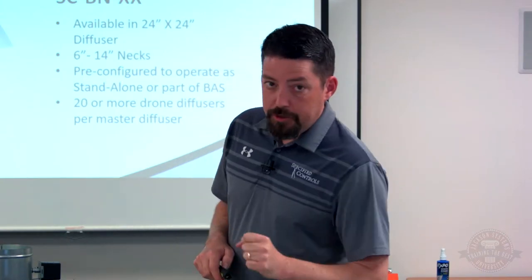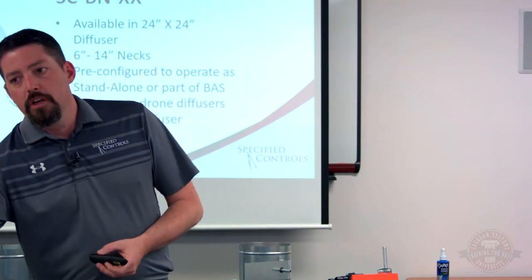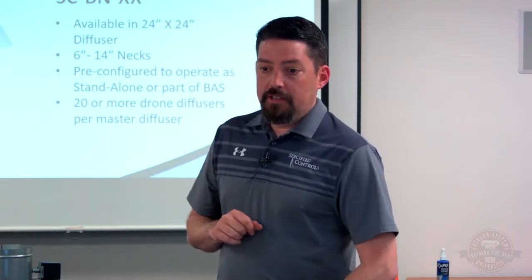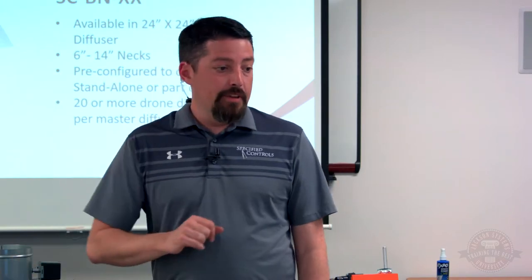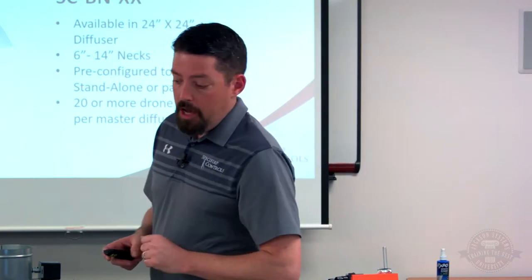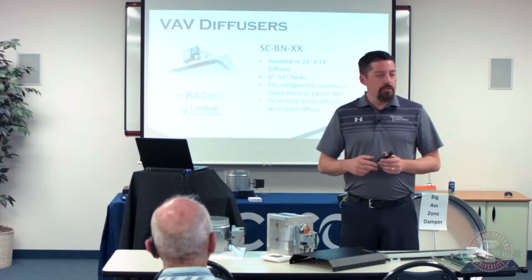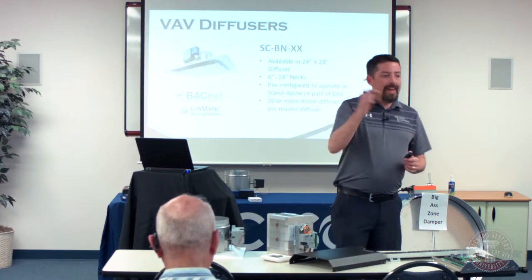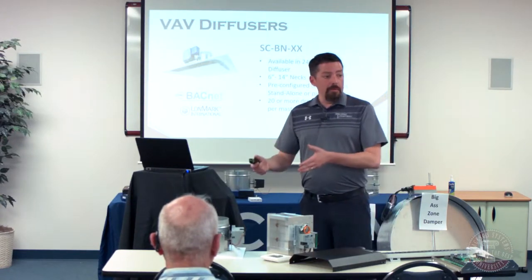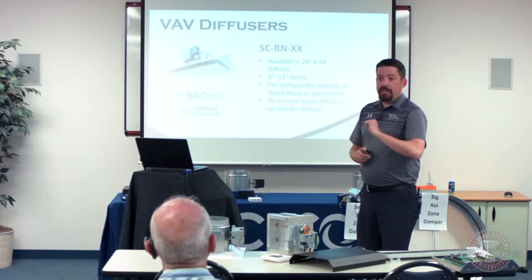Last topic from Mike: BACnet VAV diffusers. For commercial contractors dealing with building automation systems, we can make the VAV diffuser a BACnet device — monitored, controlled, and adjusted through the BAS. It's treated exactly like a VAV box in a building automation system; we're just not measuring flow. Five years ago, 95% of VAV diffusers sold were non-communicating. Last year, almost 40% of the VAV diffusers we sold were BACnet — it's becoming standard. BACnet devices can be daisy-chained as well.